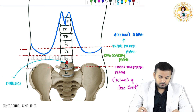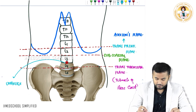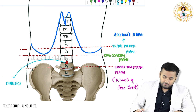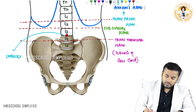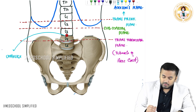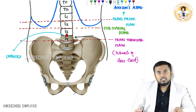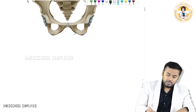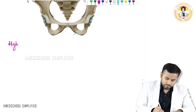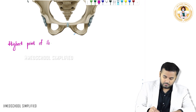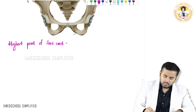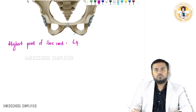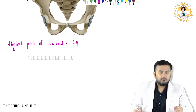Another question that is asked is: what is the highest point of the iliac crest? This is the highest point of the iliac crest. At which vertebra is it located? The highest point of the iliac crest is at the level of L4. So just write that point down — highest point of iliac crest is at the level of L4.